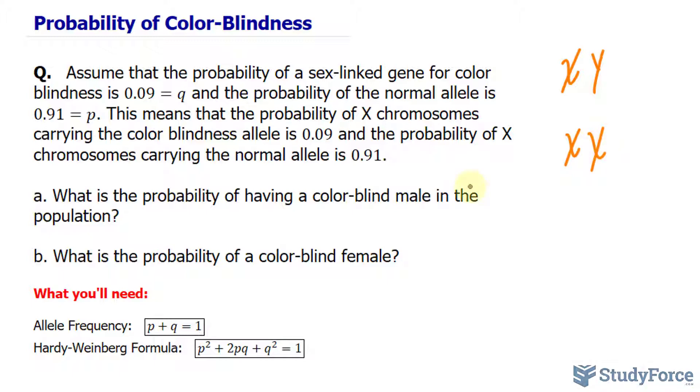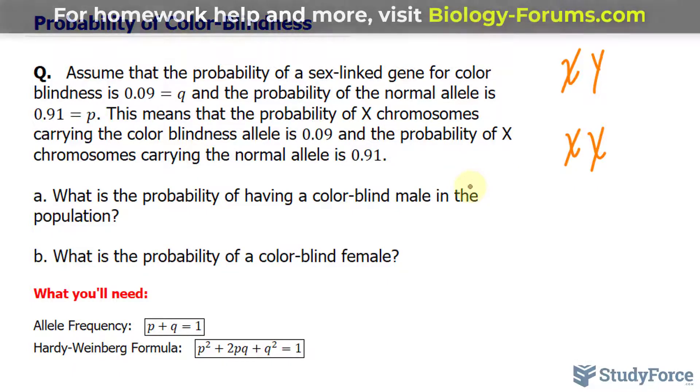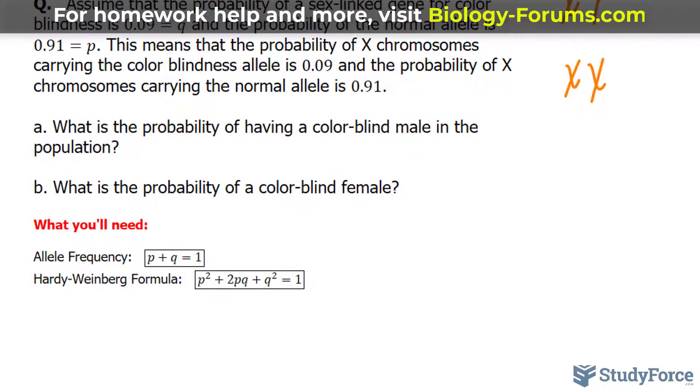So to answer question A, what is the probability of having a colorblind male in the population? What we will use is the Hardy-Weinberg principle, specifically the formula shown right here.